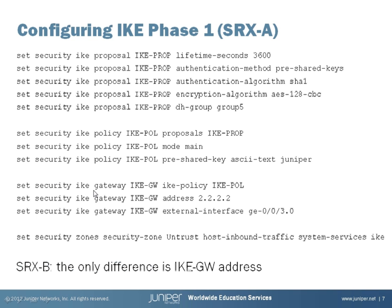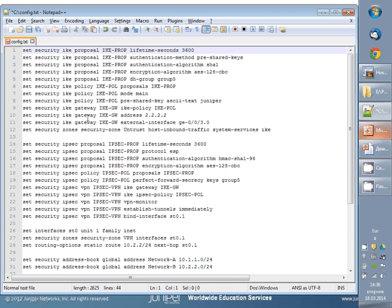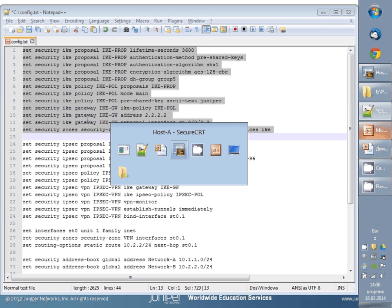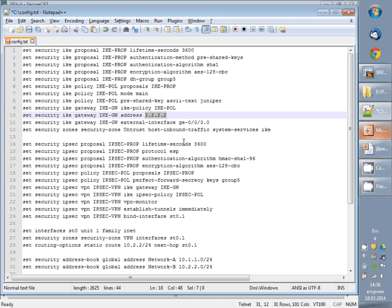The last step for Phase 1 is configuring the IKE gateway, which references the IKE policy. We configure the external interface under the IKE gateway — this is the interface in the untrust zone. The IKE gateway address is the address of the remote SRX device. We also configure host-inbound traffic system services IKE on the untrust zone. The configuration is the same on Site B except the IKE gateway address, which should be 1.1.1.1 on SRX-B. I will paste these commands on both SRX devices.